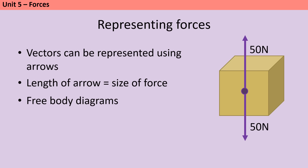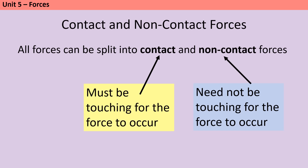Vectors including forces can be represented by arrows where the length of the arrow corresponds to the size of the force and the direction tells you what direction it's acting in. We can use these to draw free body diagrams. Instead of wasting time drawing a car or a boat, we have a small circle to represent the centre of mass and then the arrows go off this showing the forces that are acting on a particular object. Forces can also be split into contact and non-contact forces. A contact force is one that only exists if the surfaces are touching each other. A non-contact force can exist even when objects aren't touching each other, but that doesn't mean it goes away just because they are touching.